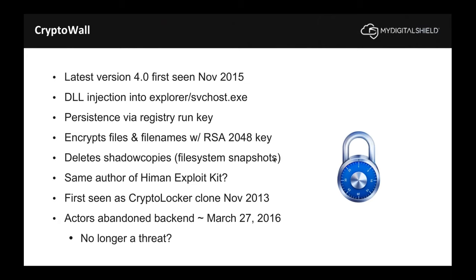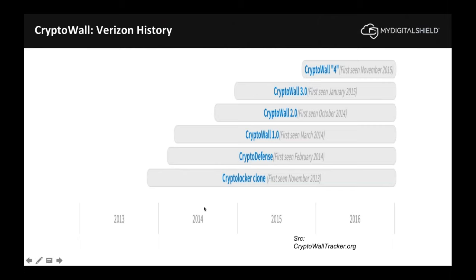The first one I'll talk about is probably the most famous: CryptoWall. As the name implies it encrypts your files and puts a firewall between you and them. It's persistent through reboots, deletes local file system snapshots, and hopes you don't have a backup strategy. It was the number one ransomware family monitored by researchers for years. We first saw it live in 2013, and as researchers found problems and published fixes, the authors would read those blog posts and improve CryptoWall, releasing several versions over a span of years.